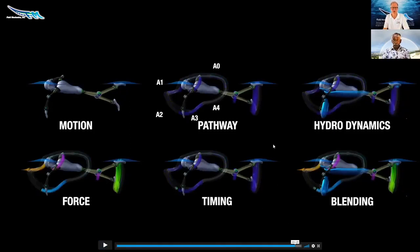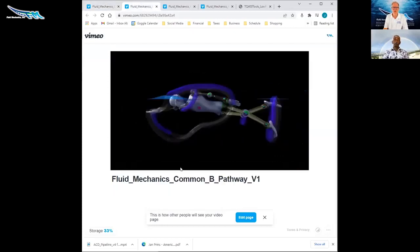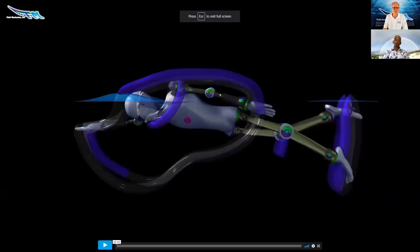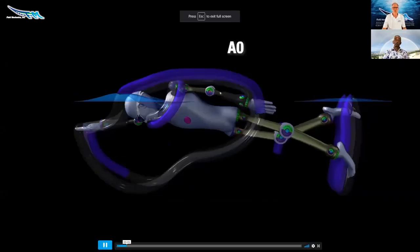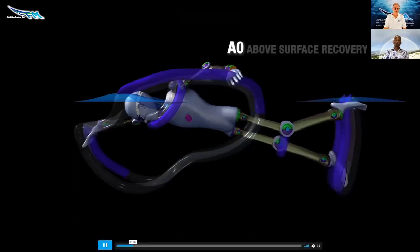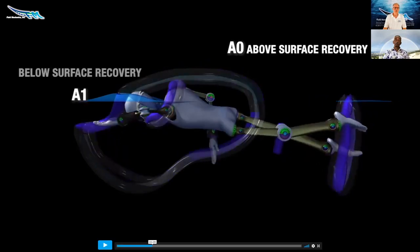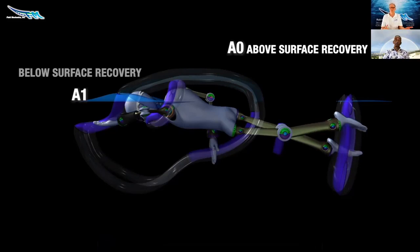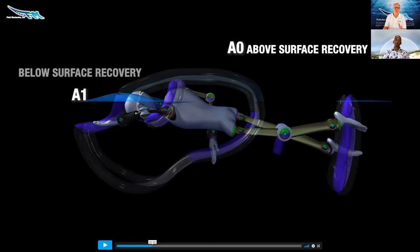Here we have the timing, and that's how things are being put together and relating to each other. And then blending, which is everything all together, right, everything combined. So let's go ahead and move over here into our pathway, and we're just going to make sure everybody sees and can see how the pathway is built. A stands for arms here folks. So A0 is when your hand's out of the water, it's recovering, the above surface recovery. A1, when it's going in the water, that's the below surface recovery.